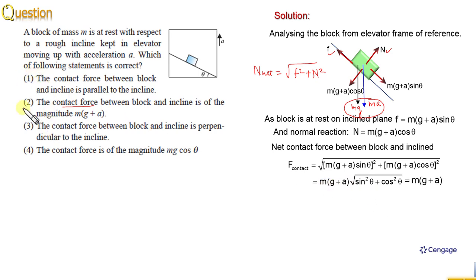Now, we can find the option, second option should be correct. Because it is given the contact between the block and inclined is having magnitude mg plus A. This is the correct option.